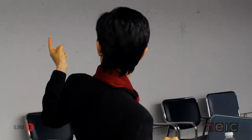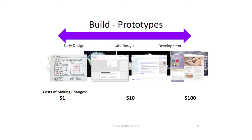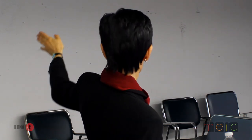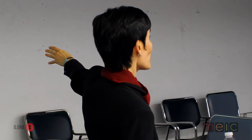And then in software, we have our early mock-ups, wireframes, and then we start getting higher and higher fidelity as we go. The beautiful thing about this is the $1, $10, and $100 cost of making changes. When we're early on, making all those changes on paper is really fast and easy. As soon as we start coding things — the back-end systems, the databases — changes start to get really expensive.